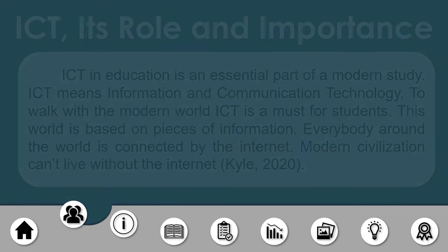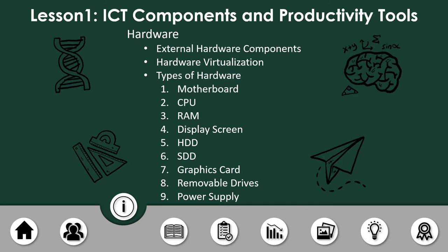We will be talking about ICT components and productivity tools. One ICT component is hardware. When we say hardware, these are the tangible tools — anything that we can hold and touch, any device that we can touch. Those are the things that we can use manually. For example, we have the mouse, the keyboard, and other tools that we can manipulate with our hands. Those are hardware.